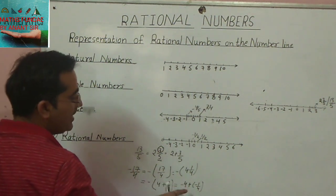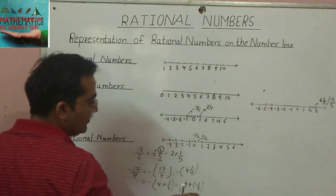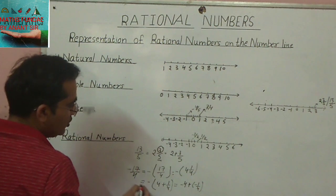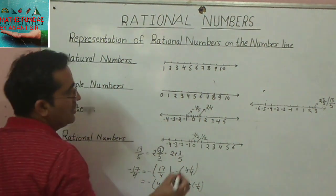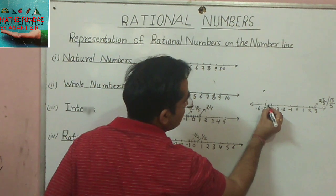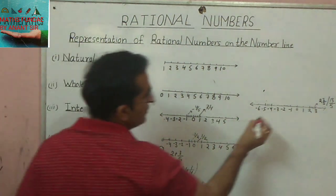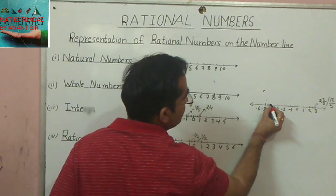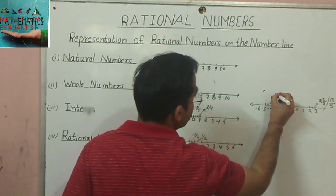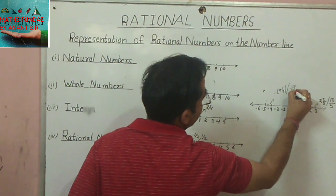This means the number lies between minus 4 and minus 5, since we are adding a negative value less than 1 to minus 4. The denominator is 4, so we divide the segment between minus 4 and minus 5 into 4 equal parts. The numerator is minus 1, so we move 1 part to the left. That point is minus 4 whole 1 upon 4, or minus 17 upon 4.